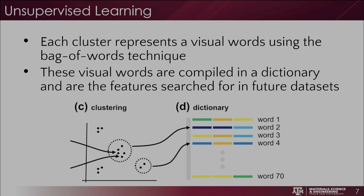Each cluster represents a visual word using the bag of words technique. The bag of words technique was originally used for text extraction, where you break up a document into a string of words to compare documents based on their word contents. The same process can be used on images to create visual words — basically subsets of an image that help represent the image or parts of it, such as anomalies within a powder bed image. These visual words are then compiled into a dictionary and are the features searched for in future data sets.